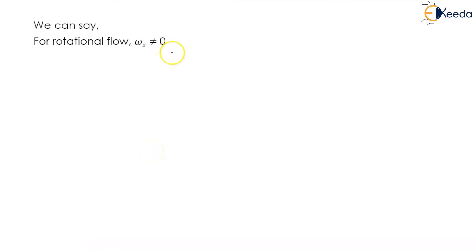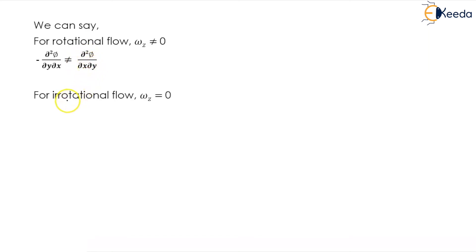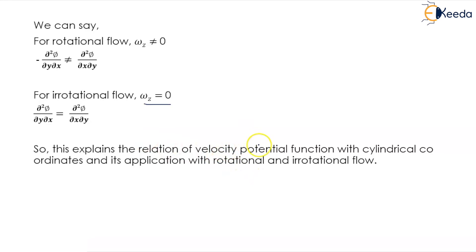For rotational flow, ω_z ≠ 0; hence −∂²φ/∂y∂x ≠ ∂²φ/∂x∂y. For irrotational flow, ω_z = 0, so ∂²φ/∂y∂x = ∂²φ/∂x∂y. This explains the relation of velocity potential function with cylindrical coordinates and its application with rotational and irrotational flow.